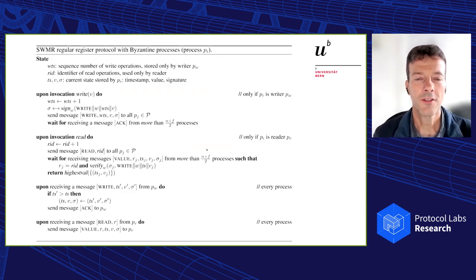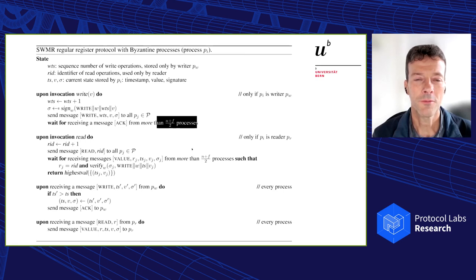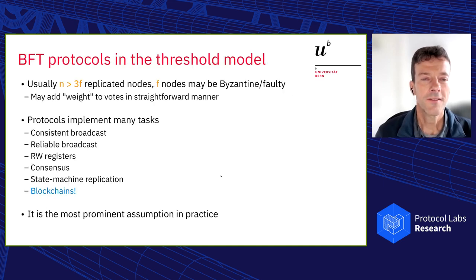Write operation, we also need a Byzantine quorum of replicas or nodes to acknowledge a read operation, and then we are safe. So we have here an algorithm. I only want you to look at this part here, it will come up later. I only want to have you look at this part here because you've seen this in the textbooks. There are tons of protocols in this model, and we call them consistent, reliable broadcast, and state machine replication, blockchain protocols as well.